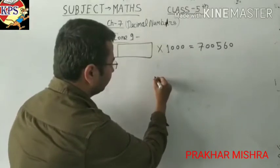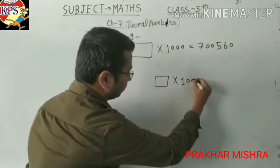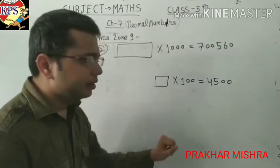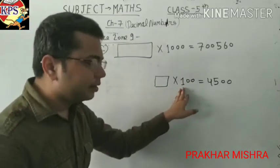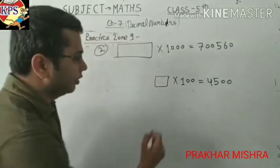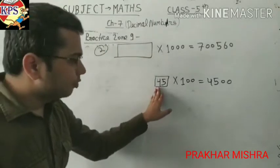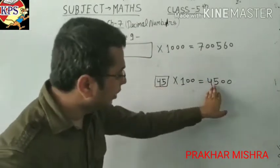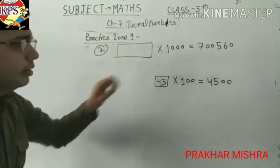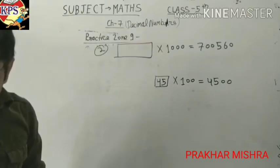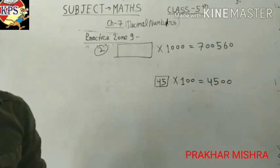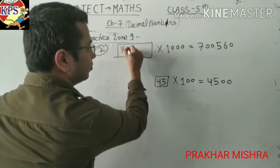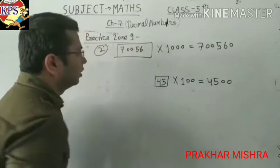Here I am giving you another example. Suppose this is the quotient: here 100 is given and here 4500 is given. By which number do we have to multiply 100 to get the answer 4500? We will write 45. If we multiply 45 by 100, we get 4500. Same thing we will do here: 1000 into 7500 — we have to find the multiplier, and the answer is the multiplier.